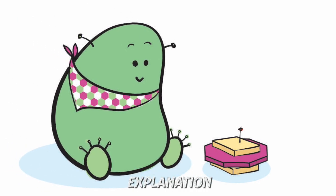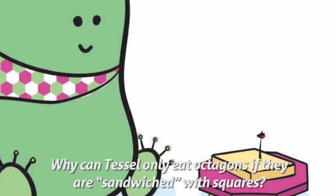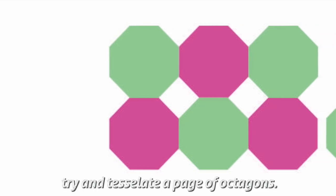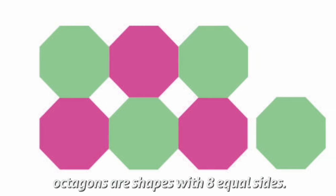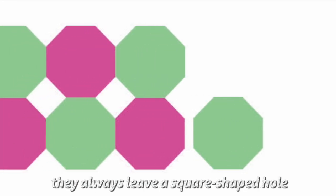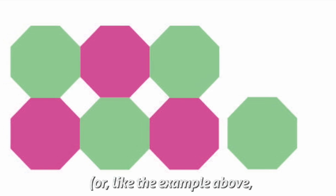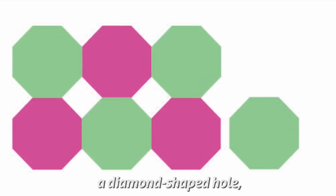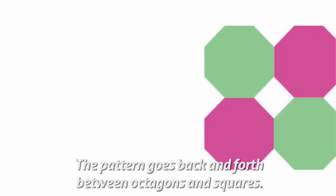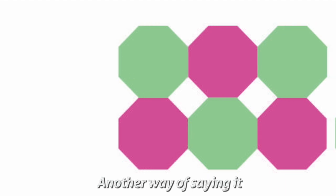Explanation — why can Tessell only eat octagons if they are sandwiched with squares? First of all, try and tessellate a page of octagons. Remember, octagons are shapes with eight equal sides. You will soon see that you can't perfectly tessellate octagons — they always leave a square-shaped hole, or like the example above, a diamond-shaped hole, which is just a square turned on its side. The pattern goes back and forth between octagons and squares.